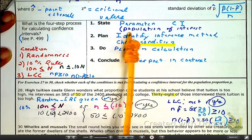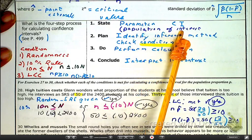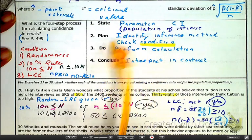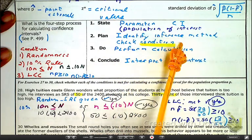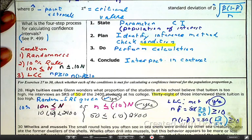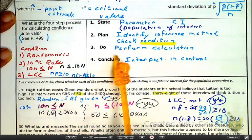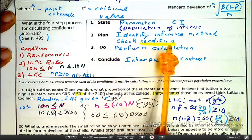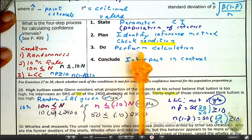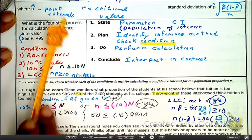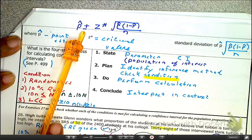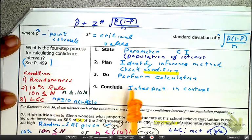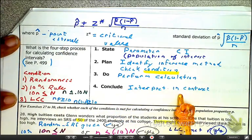We state, I need to know what the population of interest is, the parameter. We plan, we have to identify the inference method. What we're going to be doing for this one is, we're going to be doing a one-proportion Z interval. Also in the plan, we have to check our conditions and assumptions. Perform the calculations. Performing the calculations means we're going to be using this formula. Finally, in concluding, we've got to interpret in context.